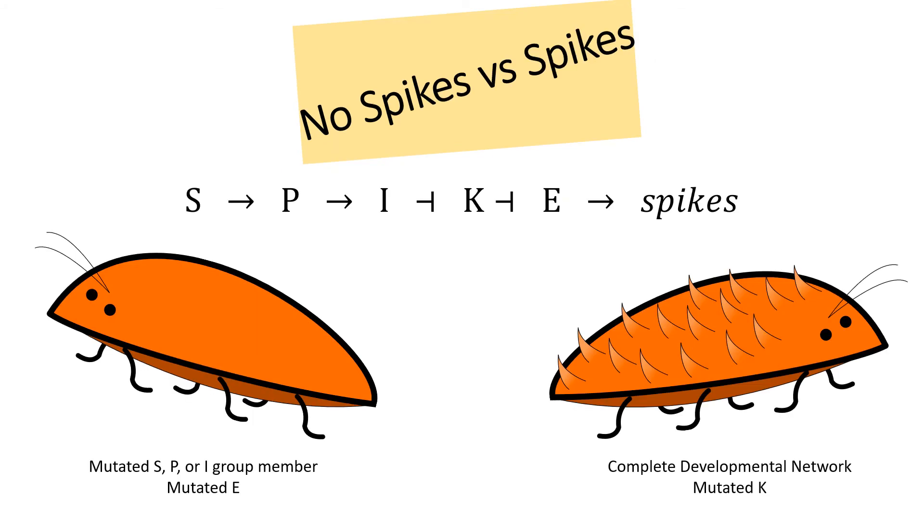I hypothesize that the cells that are smooth have a mutated S, P, and/or I gene, ultimately resulting in no inhibition of K's transcription. Also, smooth cells can have a mutated E gene which produces the wrong protein for spike production. In spiky cells there is either a complete developmental network or mutated K gene whose product cannot inhibit transcription of a wild-type E gene.